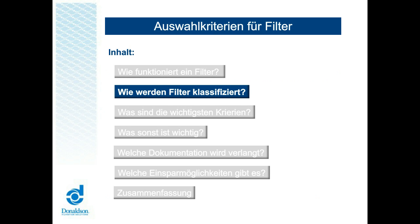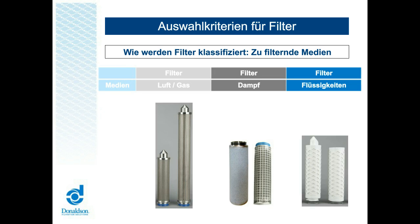Wie klassifiziert man die Filtration? Unter der Prämisse, dass sich die Filtration nach Art der Technologie und Wirkmechanismen unterscheidet, haben wir den folgenden Ansatz gewählt, um den Grad der Komplexität zu reduzieren und die Auswahl zu vereinfachen. Die offensichtlichste Unterscheidung bezieht sich auf das zu filtrierende Fluid oder Medium. In Lebensmittel- und Getränkeanwendungen unterscheiden wir dabei hauptsächlich nach Luft, Gasen, Dampf und Flüssigkeiten. Diese Unterscheidung wird uns im Lauf der Präsentation wie ein roter Faden begleiten.